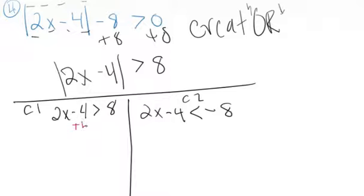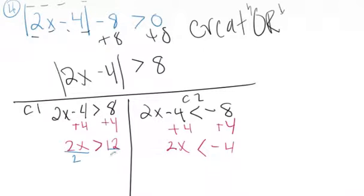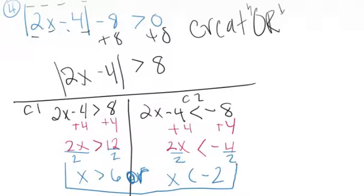First, we solve by adding 4. This is where we're going to get a difference, though. Adding 4 to 8 is going to give me 12. Versus adding 4 to a negative 8 gives me a negative 4. Next, we want to divide both sides by 2. Since I'm dividing by a positive 2, it's not going to change my inequality sign. So over here, I'm going to get x is greater than 6 or x is less than negative 2.